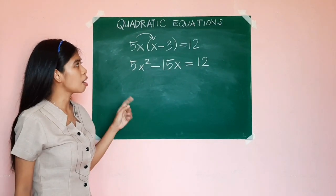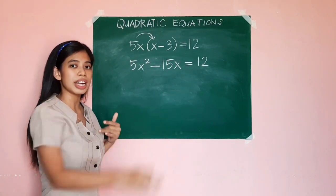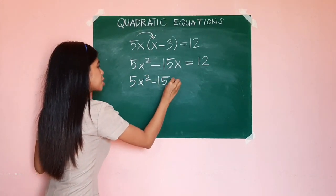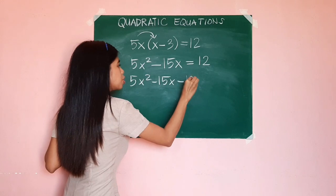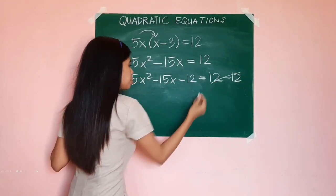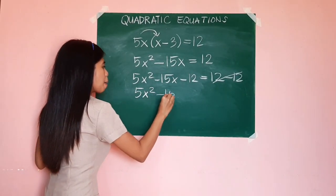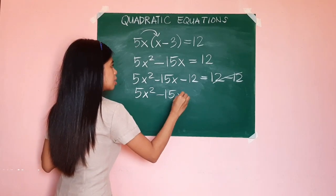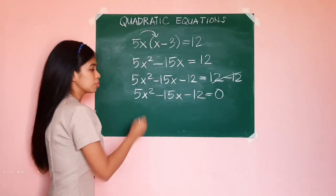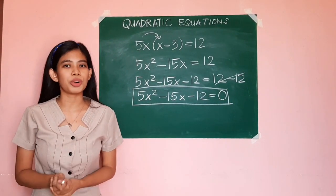Since we are after a quadratic equation which has 0 on the right side, we may just subtract 12 from both sides so that we could eliminate this. And the new quadratic equation now is 5x² - 15x - 12 = 0. This is now a quadratic equation written in standard form.